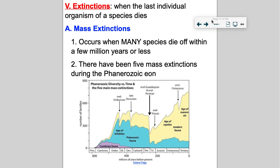The final thing I'd like to discuss is extinctions. An extinction is when a species dies out, but we can have mass extinctions where many, many species die out.